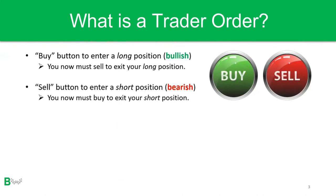There are two positions you can enter in the market: one is a buy, one is a sell. When you hit the buy button you enter a long position, also known as being bullish. You must sell to exit your long position. When you hit the sell button you enter a short position, also known as being bearish, and you have to buy to exit your short position.